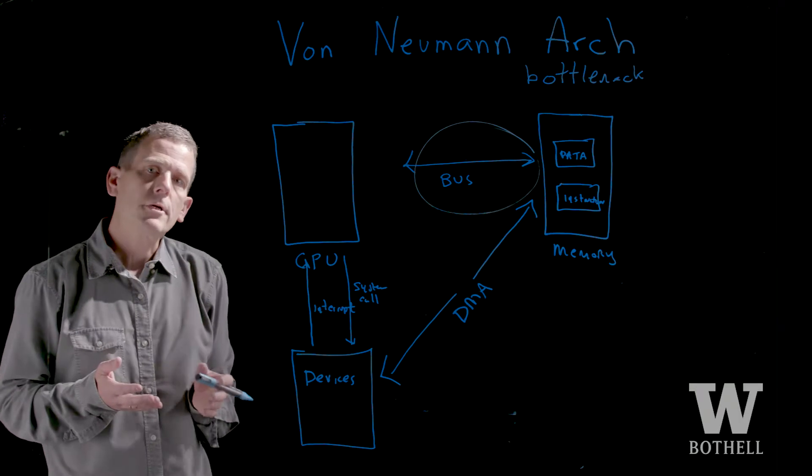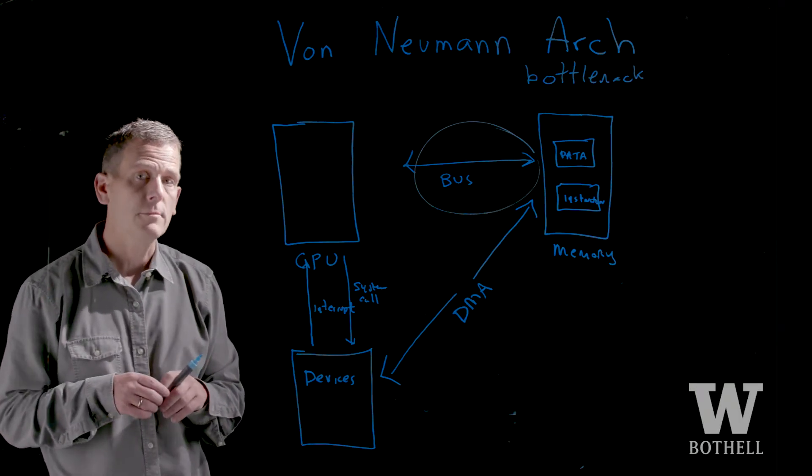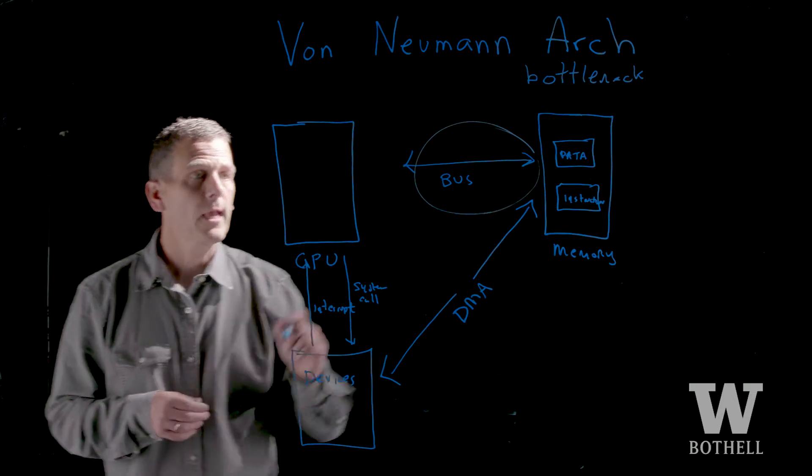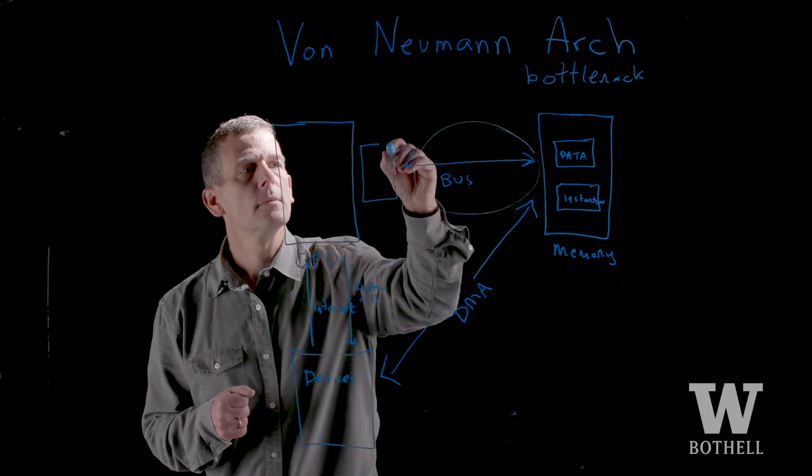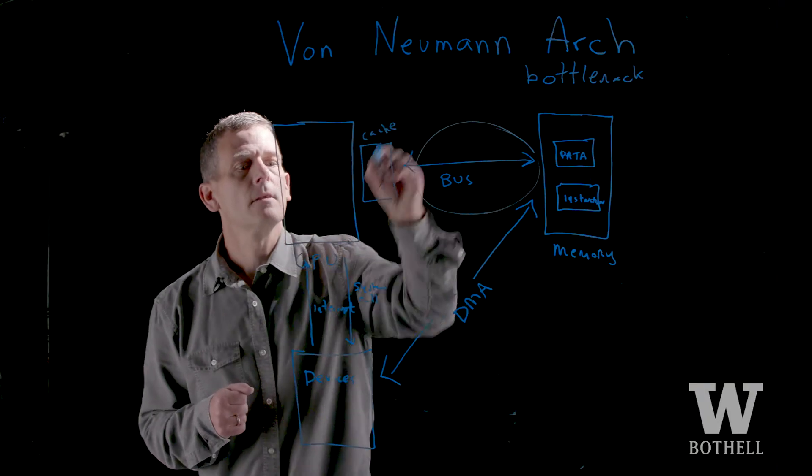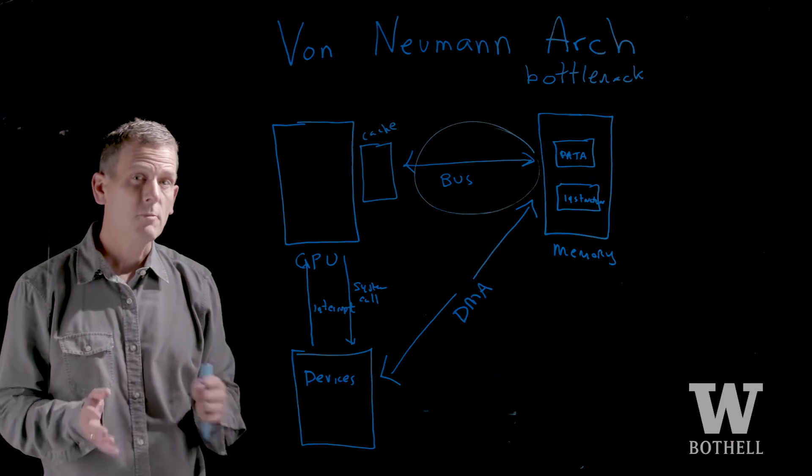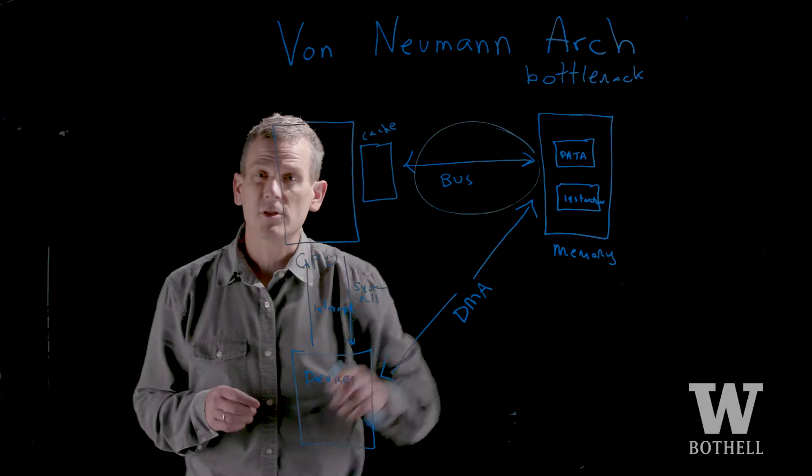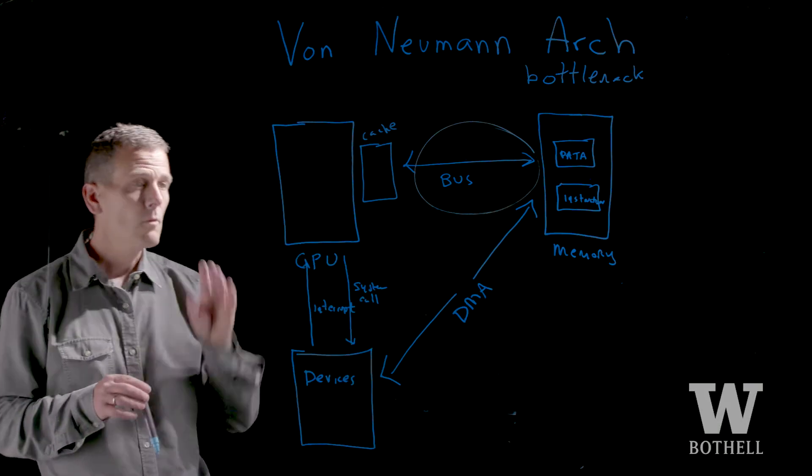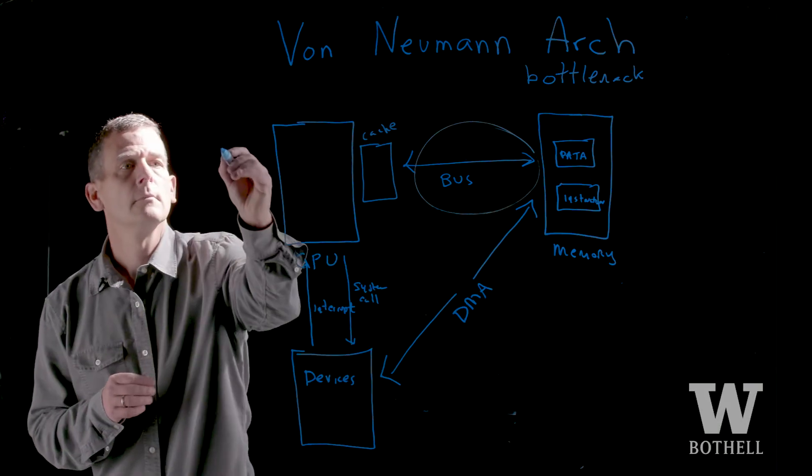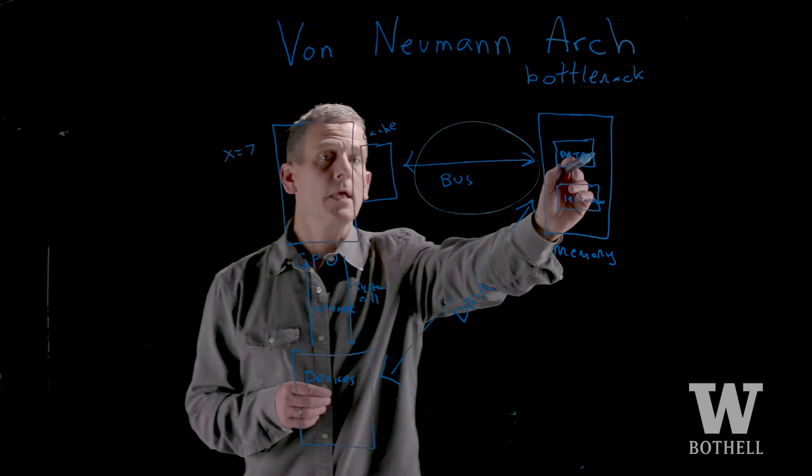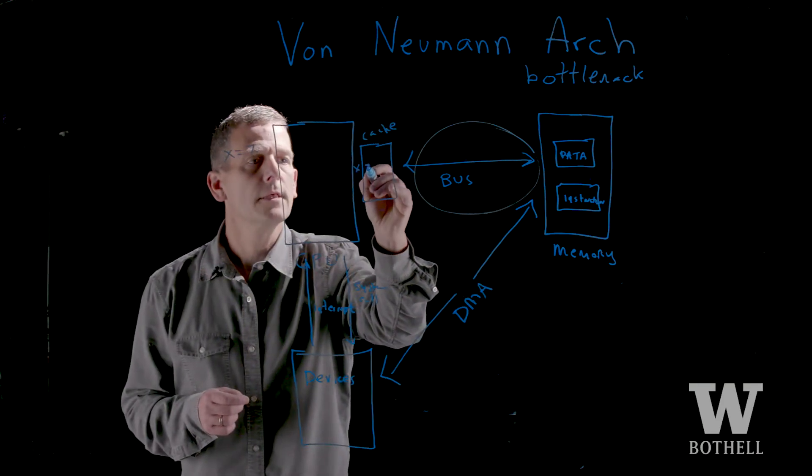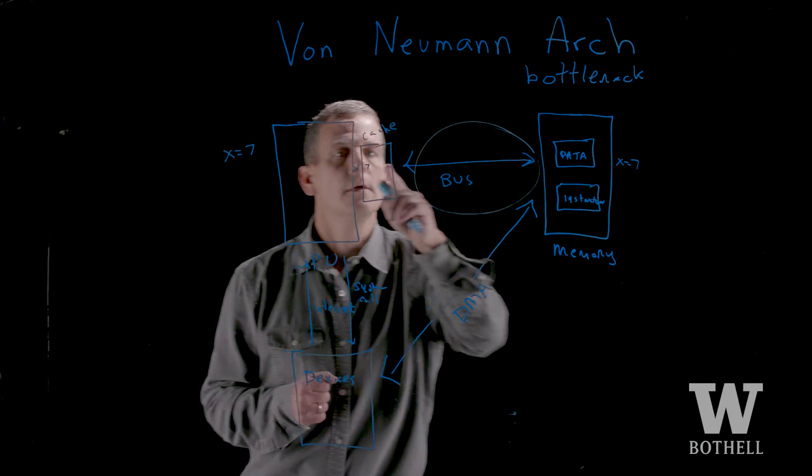There's been many architectural updates to try to address the Von Neumann bottleneck. The most powerful one is the cache. And so the idea of the cache is to have some memory which sits very close to the CPU, possibly one or two cycles away, as opposed to the real memory out here, which is sometimes 20 or 30 cycles away. When you access a variable, x equals 7, it may be sitting out in physical memory, but it moves across the bus and ends up also in your cache.